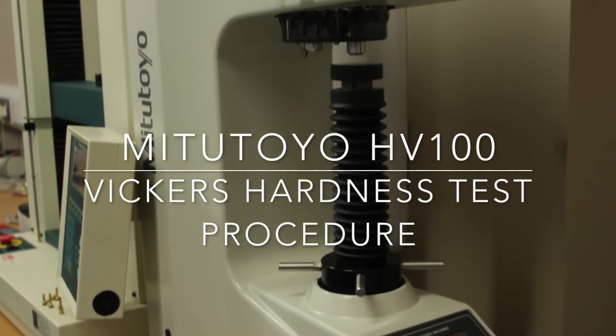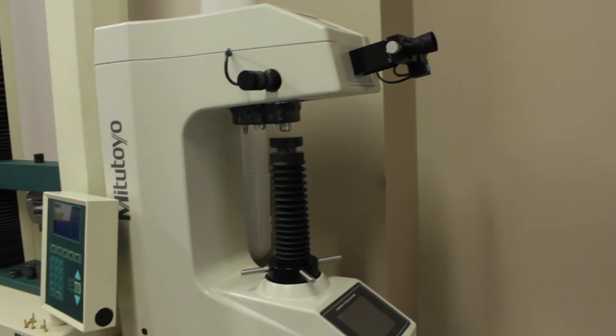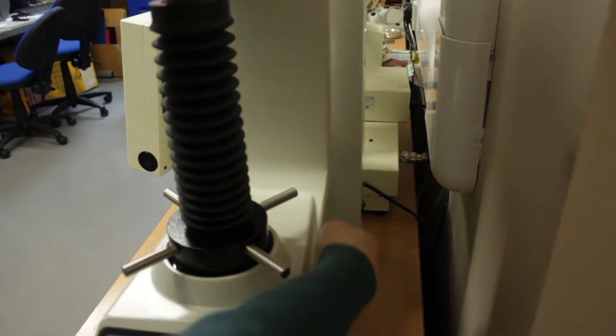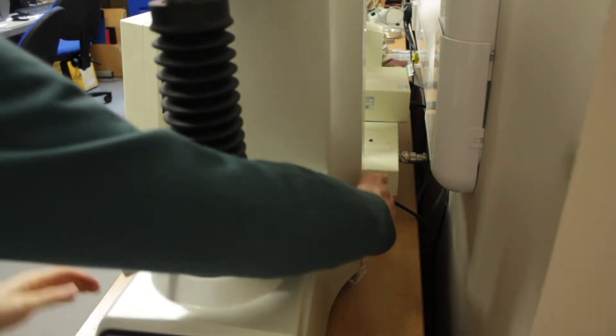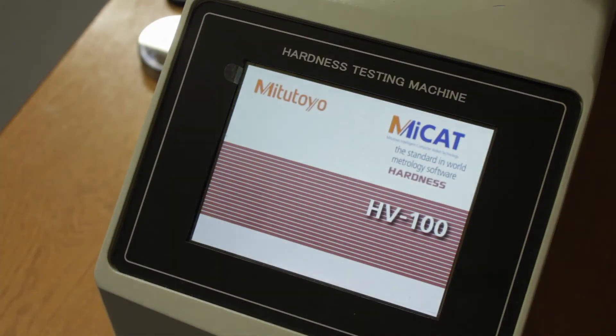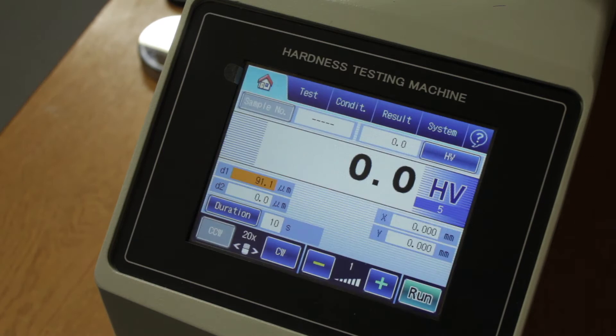This is the Vickers Hardness Testing Procedure on a Mitutoyo Vickers Hardness Tester. The first stage is to turn the machine on using the switch on the right hand side. Following this, the machine will boot and display the control screen.